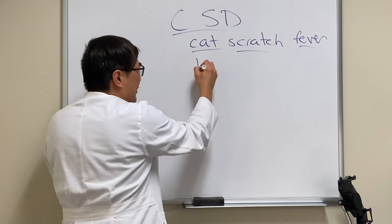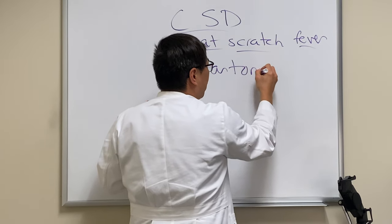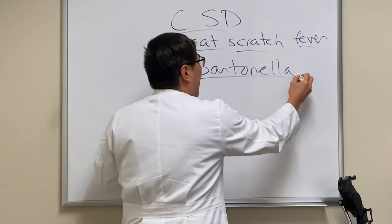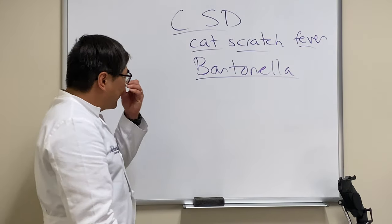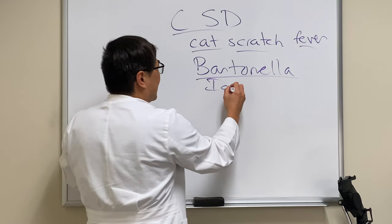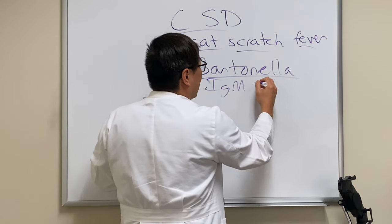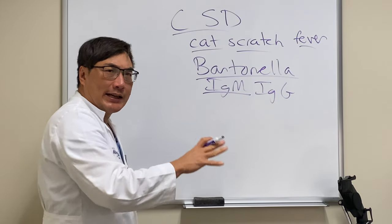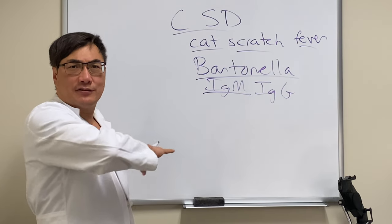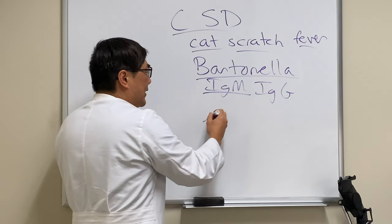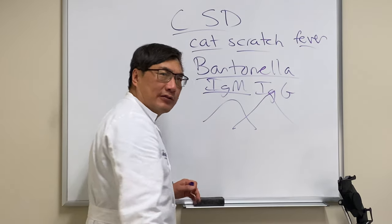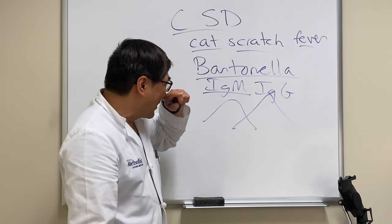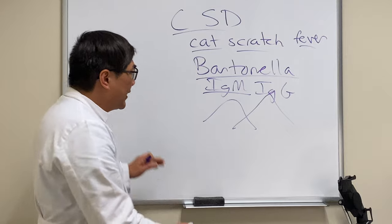The organism is Bartonella henselae. We have to do both an IgM and an IgG in this setting, but normally the IgM is already going to be negative because we have passed through the acute phase, so we're going to have to rely on a rising titer or a very high titer of IgG to make the diagnosis.